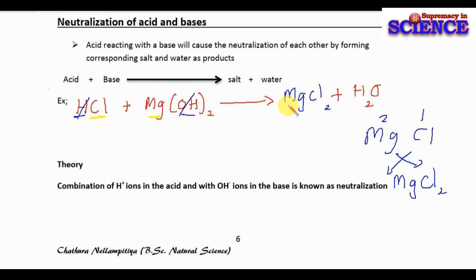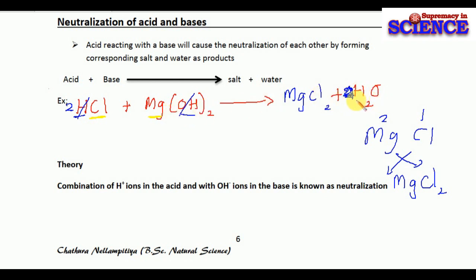Now 50% of the equation is done. The balancing part remains. Magnesium is balanced - 1 to 1. Now take hydrogen: there are 2 hydrogen on one side and 1 on the other - there should be a balance. We need to make it balance. If you put 2 on the HCl side, it becomes 4. Chlorine: here 1, here 2 in MgCl₂, so I put 2 in front of HCl. When you do that, hydrogen automatically becomes twice, so 2 hydrogen and 2 hydrogen gives 4 hydrogen. So you put 2 in front of water. By putting 2 in front of water you can get the equation balanced. That's what we call neutralization, and you now know how to write the equation.